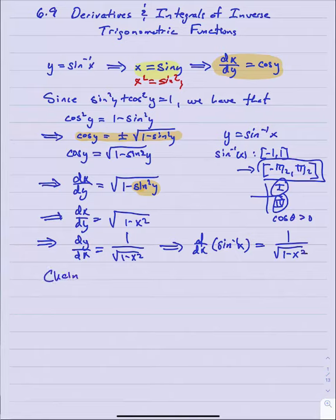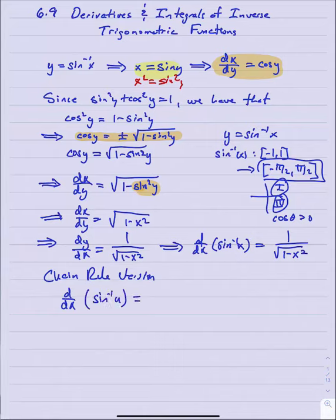Obviously there would be a chain rule version: if I take the derivative with respect to x of sine inverse of u, then what I should get is u prime over the square root of 1 minus u squared.